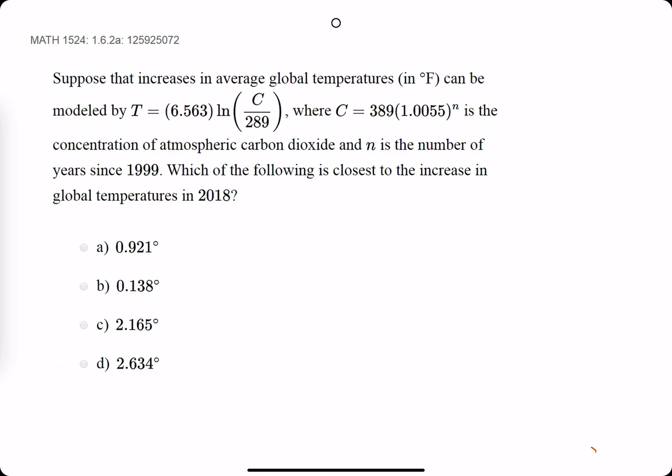Which of the following is closest to the increase in global temps in 2018? Okay, let's identify some unknowns or just some variables here. So we know that T is the temperature, C is the concentration of carbon dioxide, and N is the number of years since 1999.